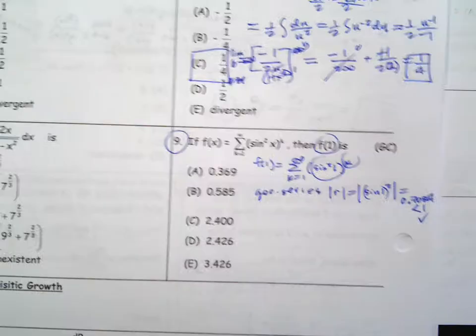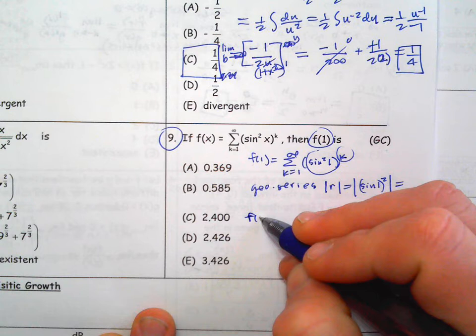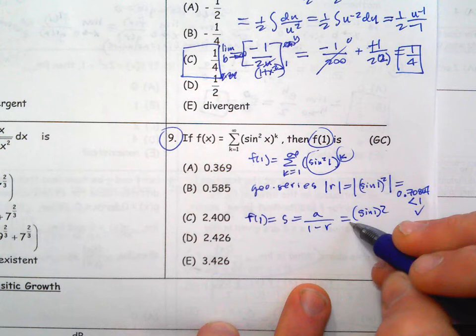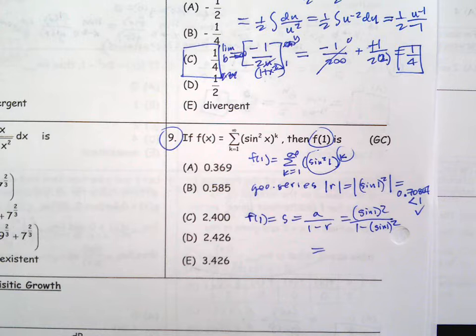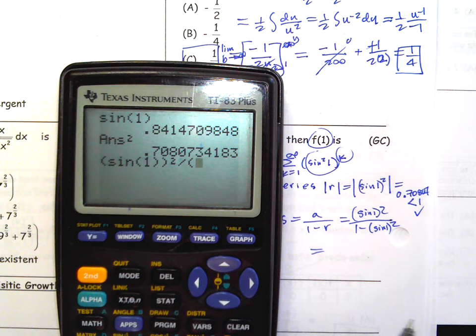The sum equals a over 1 minus r. So f(1) equals the sum, which equals sine squared of 1 over (1 minus sine squared of 1). Using a calculator: sine(1) squared divided by (1 minus sine(1) squared) gives approximately 2.425 or 2.426. There we go.